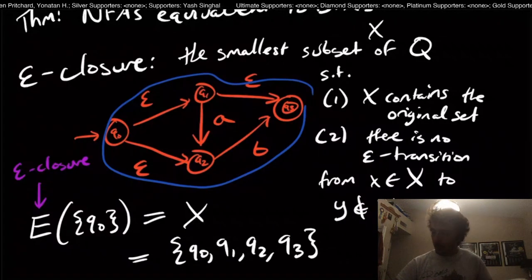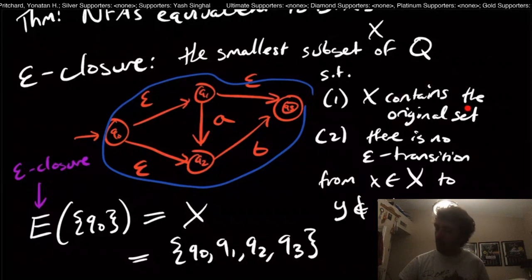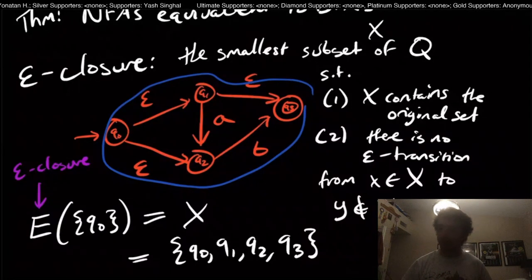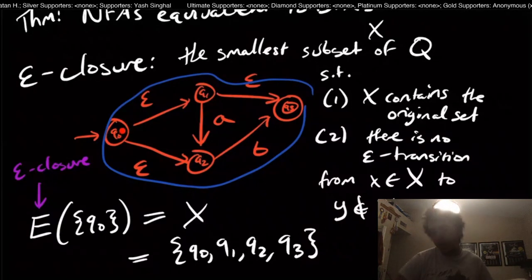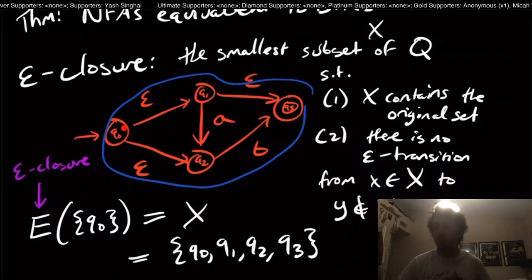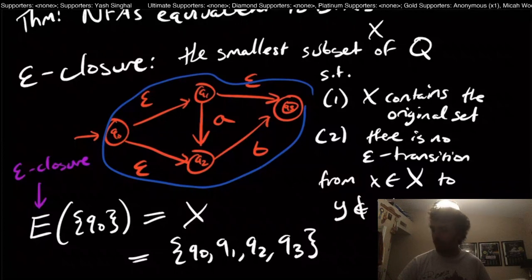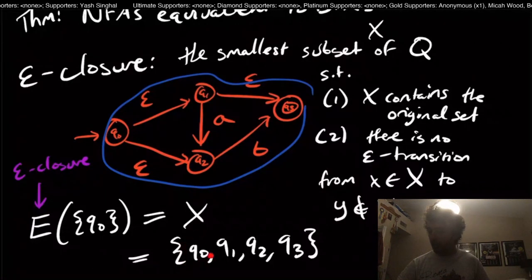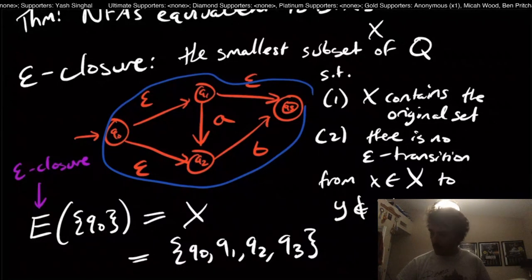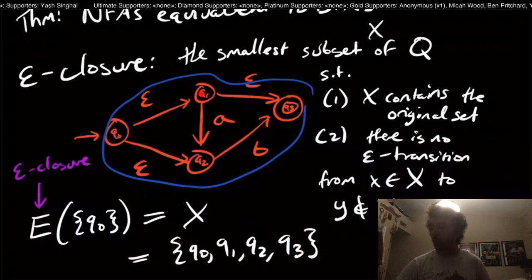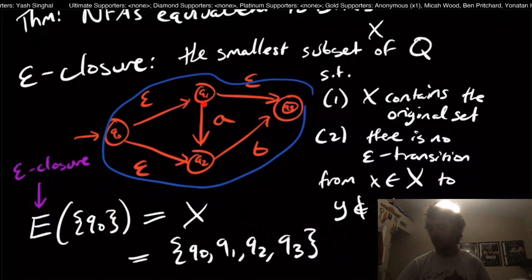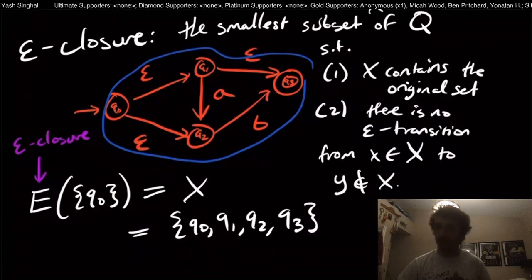So why would you want such a thing? Well, we gotta have the original set of states because remember, epsilon transitions are completely optional, you do not have to take them. So in this Q0 state, if I wanted to, I can just stay there if I wanted to. It doesn't really help us with this machine, but we could if we wanted to. So that's why the Q0 is included right here because it's in the original set. Well, then we include all these other states because those are reachable in some sense from the original set via some number of epsilon transitions.